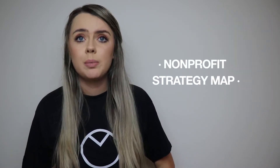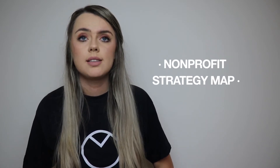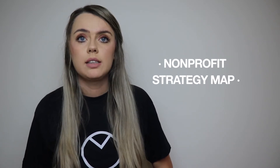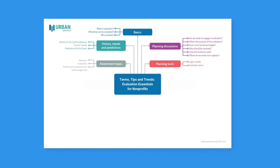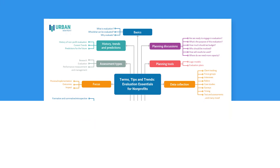Nonprofits typically begin the strategic planning process by writing up a SWOT analysis. Then the staff and board can begin defining how their nonprofit can further their mission. This nonprofit strategy map looks at how to best conduct an evaluation, including what tools to use and different approaches.